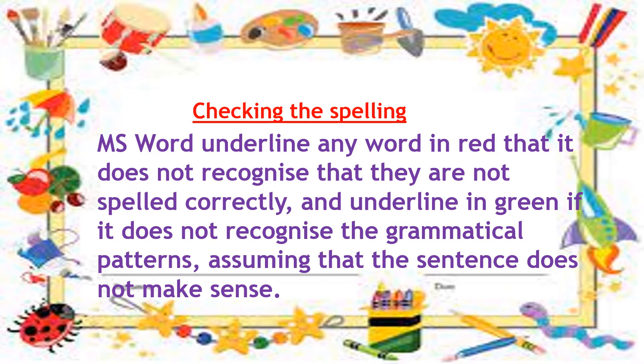Red color underlined means the word is incorrect. If we use the green color underlined, it means we used grammar with a little error. It shows the red color underlined for spelling mistakes.